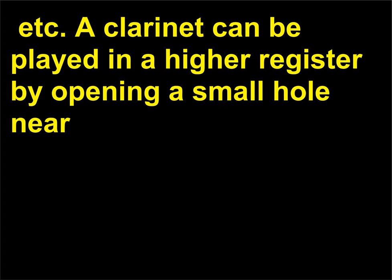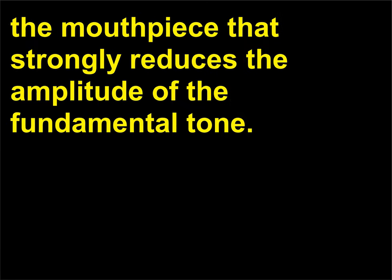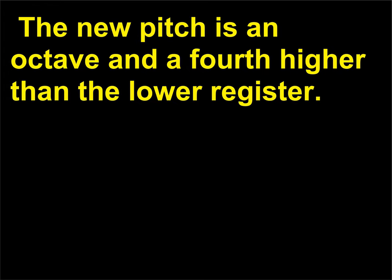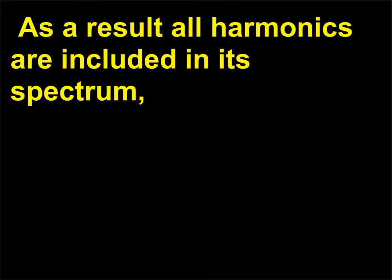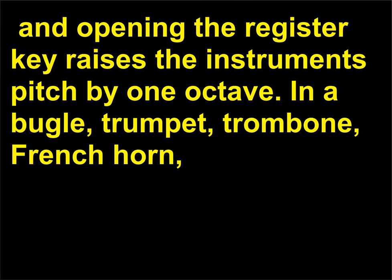A clarinet can be played in a higher register by opening a small hole near the mouthpiece that strongly reduces the amplitude of the fundamental tone. The new pitch is an octave and a fourth higher than the lower register. Saxophones are not shaped like cylinders, but like cones. As a result all harmonics are included in its spectrum, and opening the register key raises the instrument's pitch by one octave.